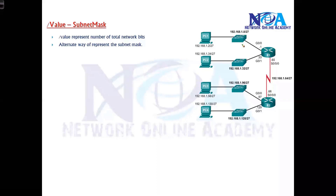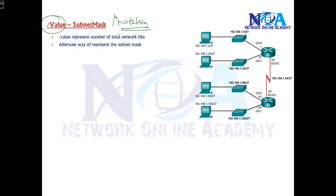The next thing we will try to understand is something called slash value or the subnet mask. Slash value is also called as slash notation, and it is an alternate way to write your subnet mask information. It simply says how many total network bits you have.